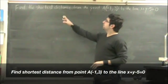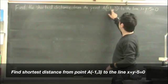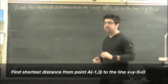Find the shortest distance from the point A, which is at negative 1 and 3, to the line x plus y minus 5 equals 0.